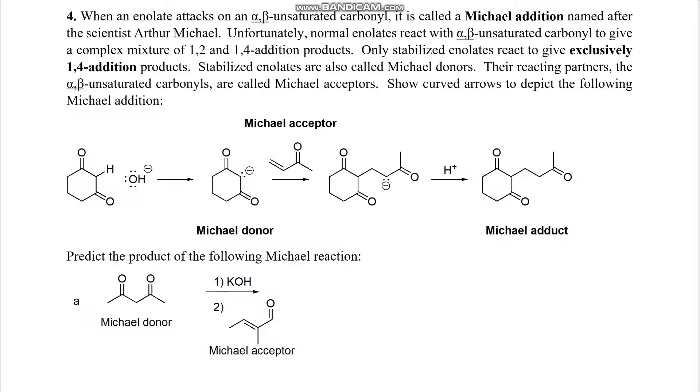Number 4, we are going to work on Michael additions. So only stabilized enolates can give us a 1-4 addition product, and that is when we have this alpha hydrogen right here. This is the most acidic hydrogen in the compound, and this oxygen will deprotonate that hydrogen, which starts off the mechanism. So when that happens, we get a negative charge on carbon number 2, and that negative charge will then attack carbon number 4 on that Michael acceptor. Now we have another negative charge right there that will then deprotonate an acid, giving us a stabilized Michael product.